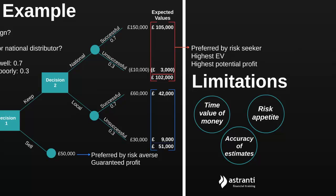We need to remember that decision trees can help us to inform our decisions, but they should not be the only tool we use. We also need to include other considerations, including the time value of money, the accuracy of any estimates we've used, and our organisational risk appetite.